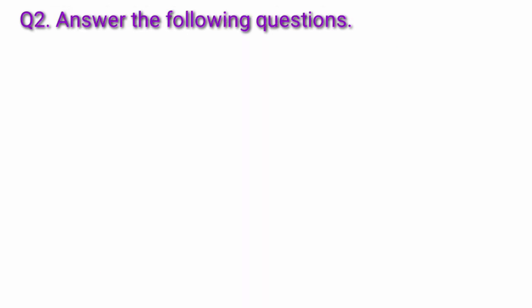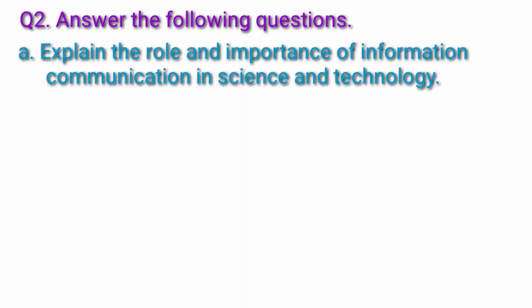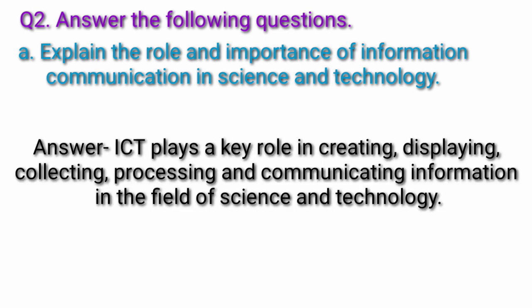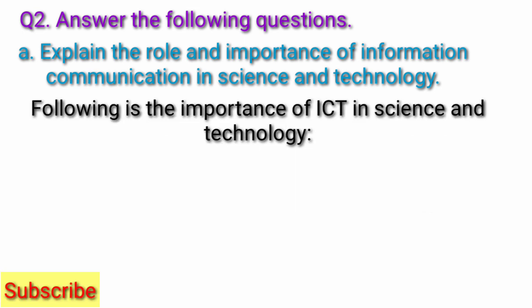Question 2: Answer the following questions. A: Explain the role and importance of information communication in science and technology. Answer: ICT plays a key role in creating, displaying, collecting, processing, and communicating information in the field of science and technology.